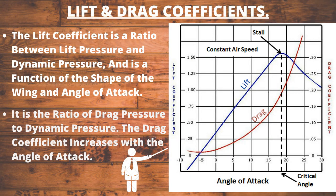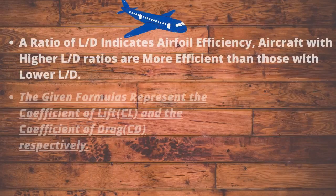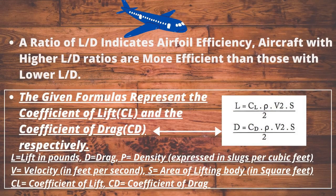Lift and drag coefficients. The lift coefficient is a ratio between lift pressure and dynamic pressure, and is a function of the shape of the wing and angle of attack. The drag coefficient is the ratio of drag pressure to dynamic pressure, and it increases with angle of attack. The lift-to-drag ratio, L/D, is the amount of lift generated by a wing or airfoil compared to its drag. A higher L/D ratio indicates greater airfoil efficiency.